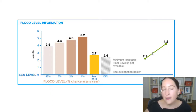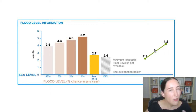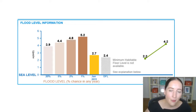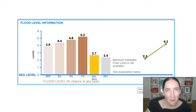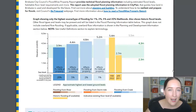Looking at the old report, I was pretty happy with it — I thought that was a good amount of information. But then they dropped the new Floodwise Property Report, and I realized — no, we can do better. Boom!